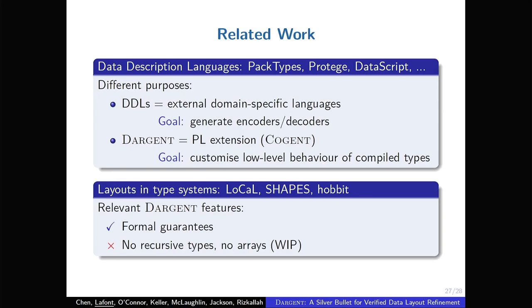So before concluding, I just want to mention some related work. So the first thing I want to stress is that Cogent is not a data description language. Data description languages are external domain specific languages. The goal is to generate encoders and decoders from a description within this language. But Dargent is really integrated into a programming language. So it's really an extension to a programming language. So it's integrated completely into the type system. So you have layer abstraction. And the goal is to customize the low level behavior of your types. And we have also other related work that are also focusing on integrating layouts in the language, but none of them provide formal guarantees like Dargent does. On the other hand, Dargent does not support yet recursive types or arrays. The reason being that Cogent does not support it yet, but this is work in progress.